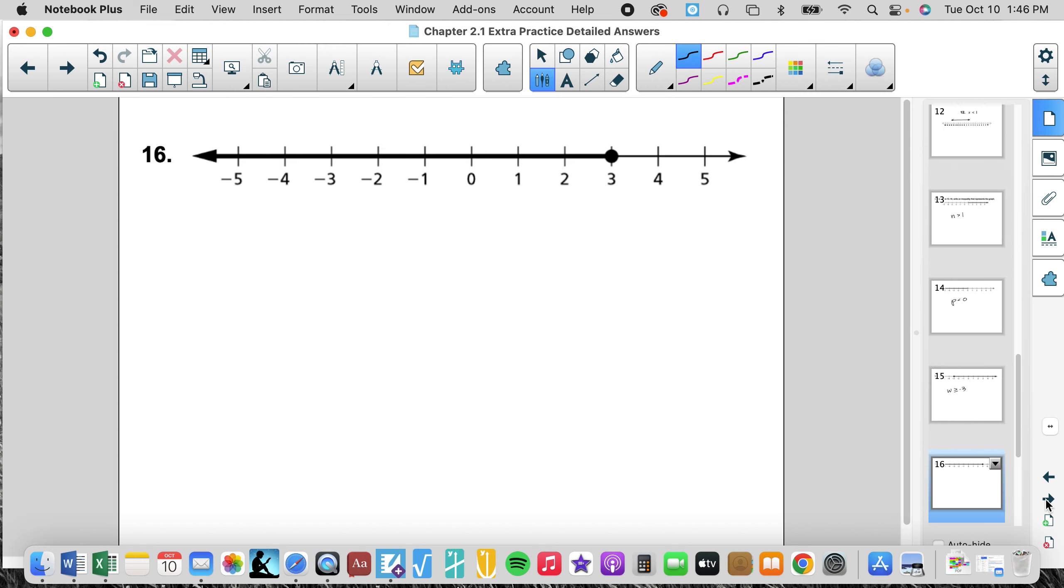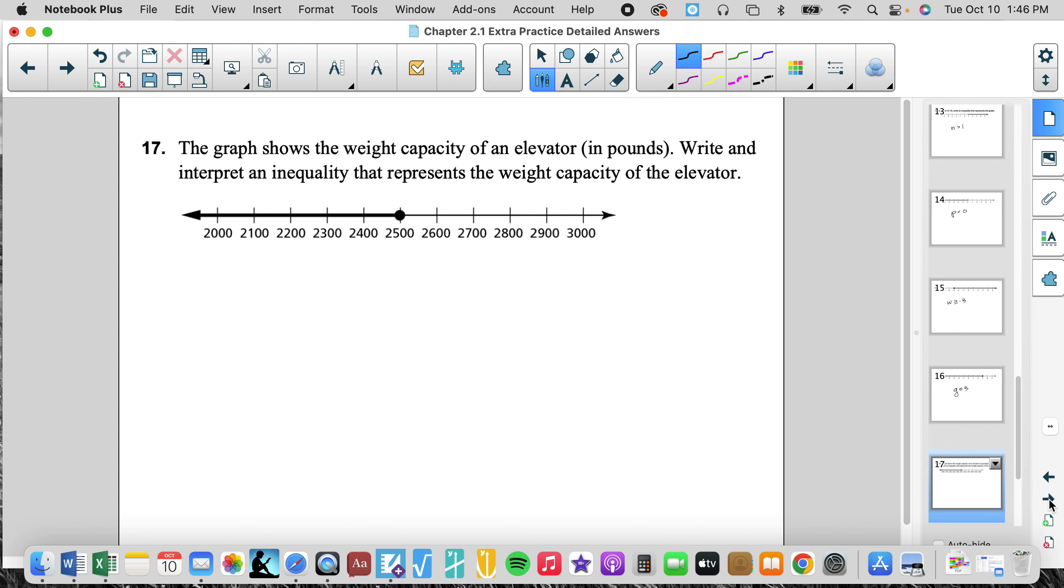And this one would be, let's give a fun letter. Let's do G. G is less than or equal to 3. It's a closed circle, so we can include the solution on the border. 3 is a solution.